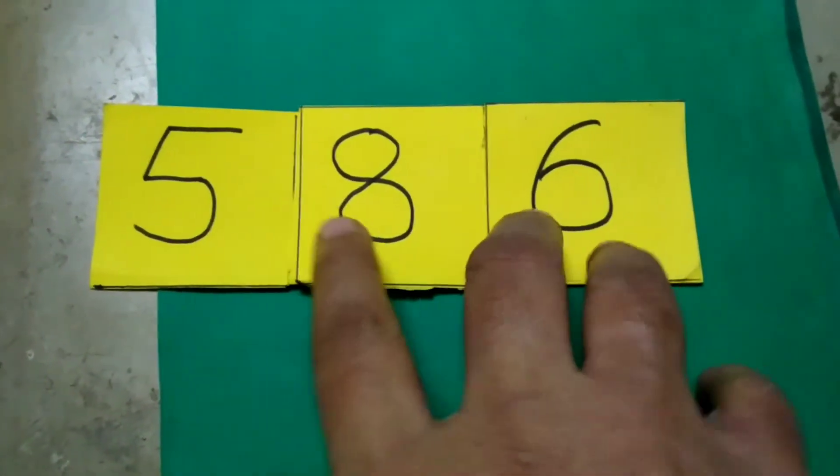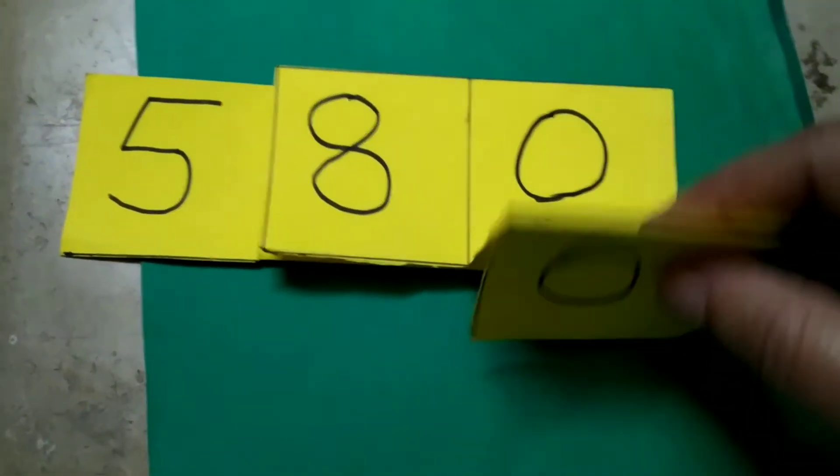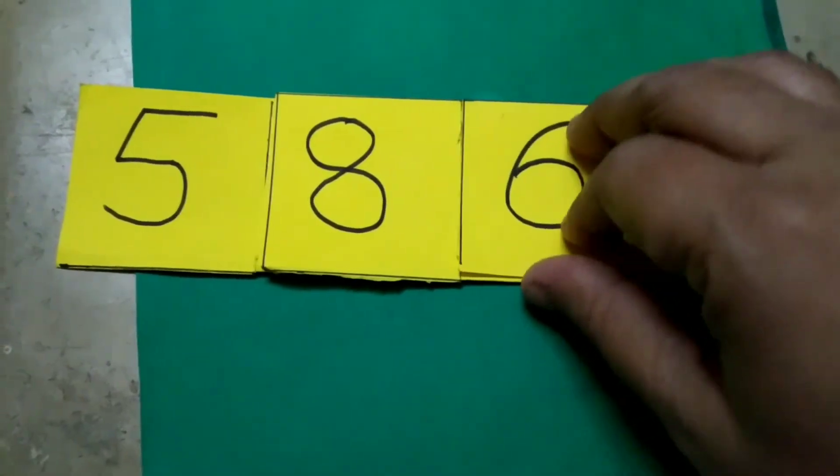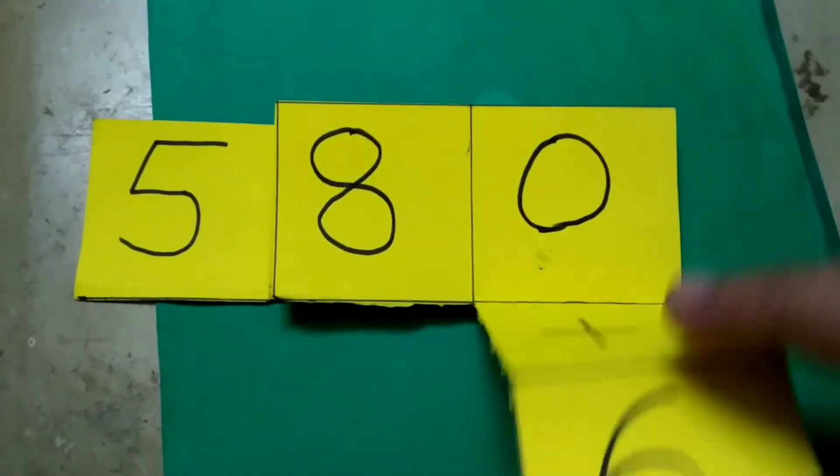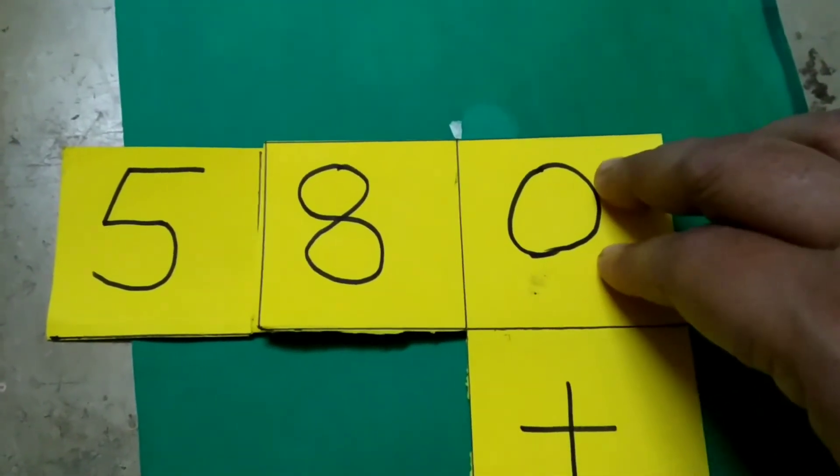This number is 586. The 6's place value means 6 ones are 6. 8 is at 10th place, so 8 into 10 is 80.